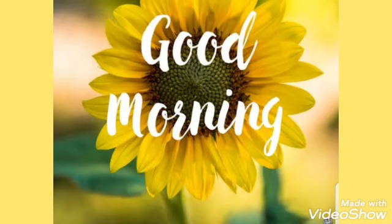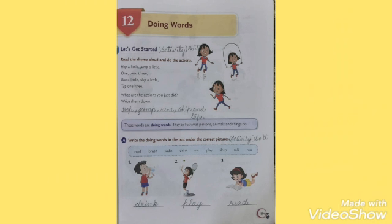Good morning dear students, I hope everybody is doing fine. Today I will teach you lesson number 12 of English grammar book, that is doing words. Children, our today's topic is doing words or action words. Any action that we do are doing words — a word that tells what someone or something does. Let us start with some examples.